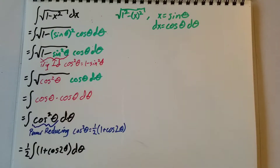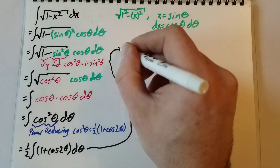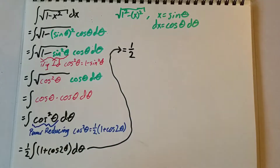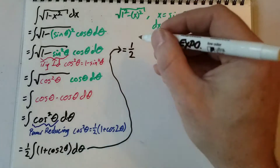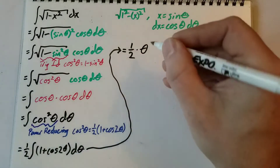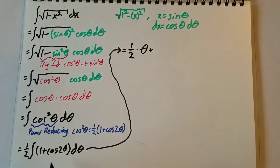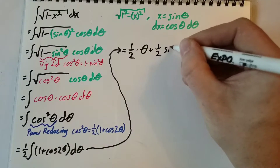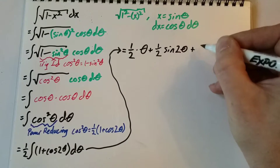Now all we have to do is integrate with respect to theta. That equals one half — the integral of 1 is theta — plus one half sine 2 theta, plus c.